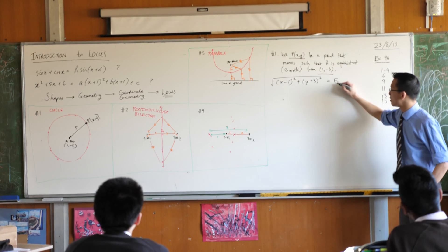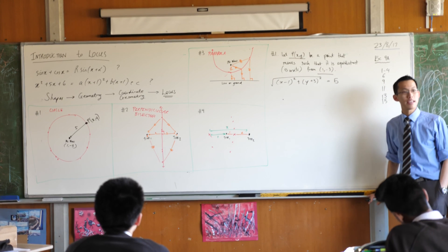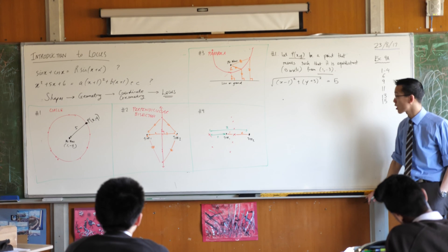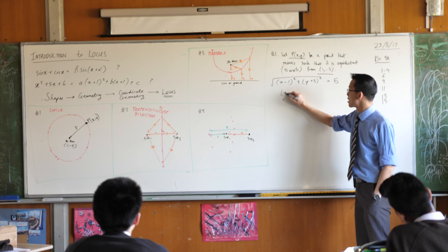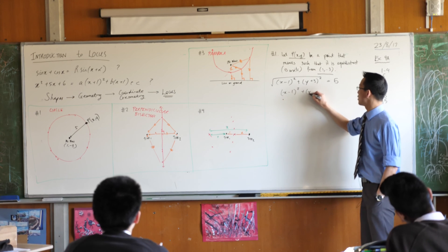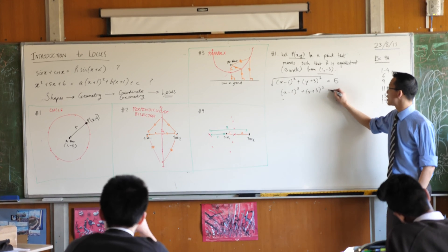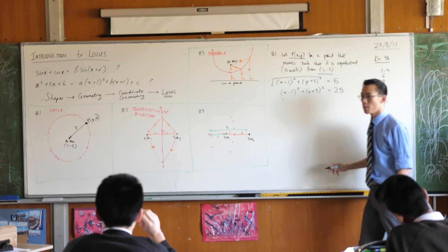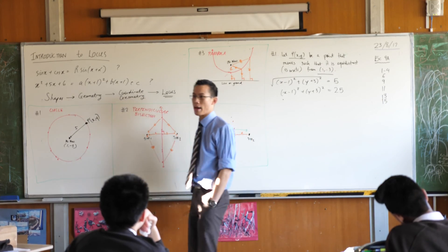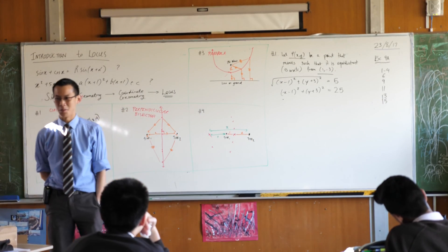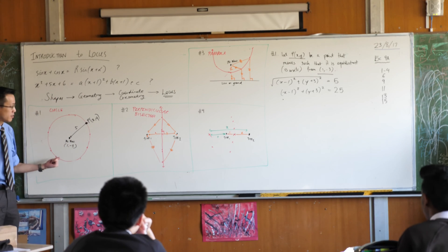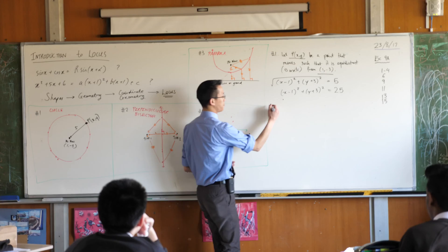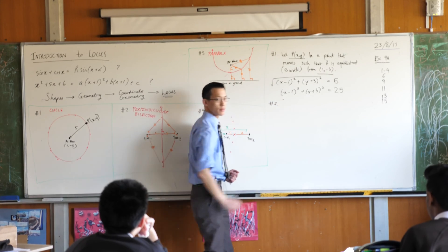So this should ring a bell, because back in year 10 when you first encountered this equation of a circle, this is where we began. We began with the distance formula, and you can see the familiar form of the equation of a circle comes straight out of this. You were doing locus back then, we just didn't tell you that's what you were doing. So that's very straightforward to understand. Now think about number 2.